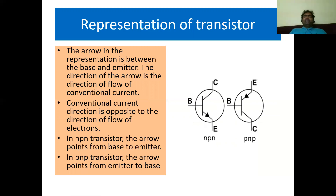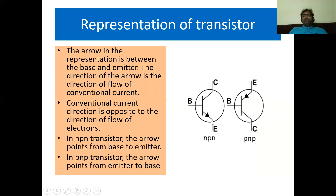Let us see the representation of a transistor. This is the symbolic representation of an NPN transistor and this is the symbolic representation of a PNP transistor. If the arrowhead is from base to emitter, then it is an NPN transistor. If the arrowhead is from emitter to base, then it is a PNP transistor. The arrowhead represents the conventional flow of electric current.